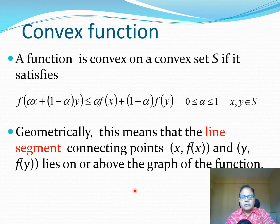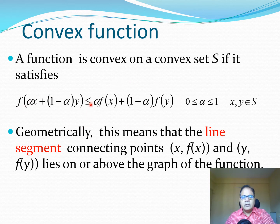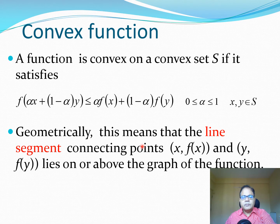Now let us come to the concept of a convex function. A function is convex on a convex set S if it satisfies this particular formulation: the function value at all points is less than or equal to the line segment value at all those points. This equation represents the line segment between any points x and y, where alpha varies from 0 to 1 and all x, y are in the set S. Geometrically, this means that the line segment connecting points (x, f(x)) and (y, f(y)) lies on or above the graph of the function.